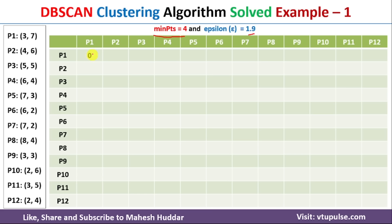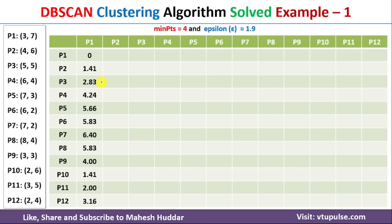The distance from P1 to P1 is always 0. Now we calculate the distance from P1 to P2. P1 is (x1, y1) and P2 is (x2, y2), so the square root of (4 minus 3) squared plus (6 minus 7) squared gives 1.41. Similarly, the distance from P1 to P3, where x1 y1 is (3,7) and x2 y2 is (5,5), gives square root of (5 minus 3) squared plus (5 minus 7) squared, which equals 2.83.